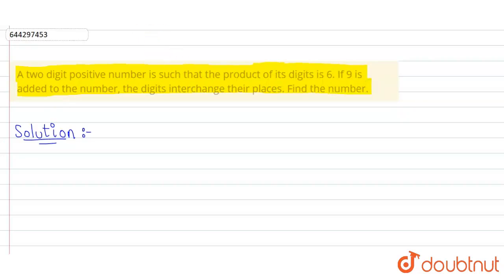Let us start. It is a two-digit positive number, so let the digit at tens place be x and at units place be y.